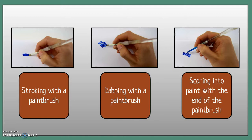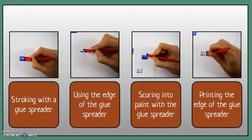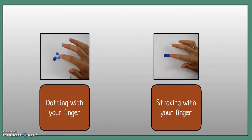When using your paintbrush, you'll be using different paintbrush strokes — you can dab and score to put details into your matchstick men and matchstick women. If you have a glue spreader, you can experiment with spreading paint along and drawing different types of line using its edge. With your finger, you can experiment with dotting and stroking to create different shapes. Or maybe a cotton bud would be the tool of your choice.